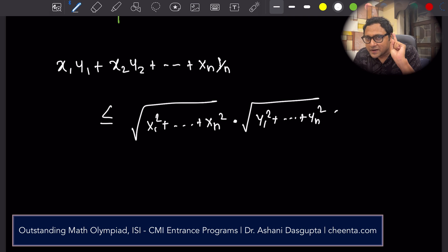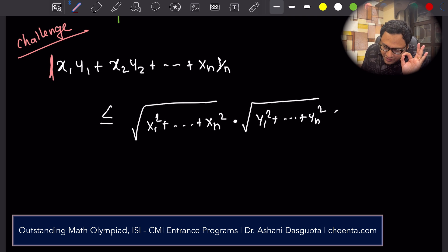It's actually a little bit more than that. So here is a challenge question. Actually, it is the absolute value of this because this dot product could be negative. Dot product could as well be negative.